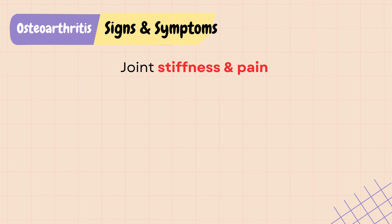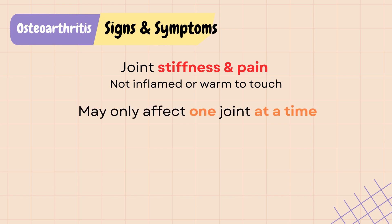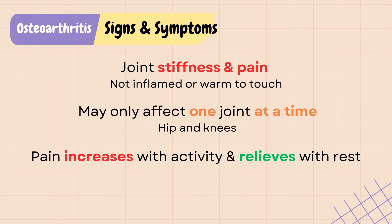Signs and symptoms: there is usually stiffness and pain on the affected joints. However, unlike RA or rheumatoid arthritis, the affected joints are not inflamed or warm to touch, and OA may only affect one joint at a time, especially larger weight-bearing joints such as the hip and knees.